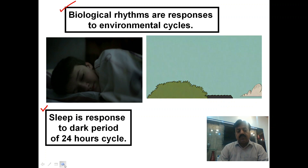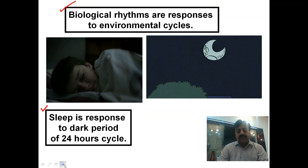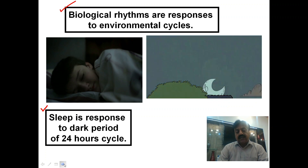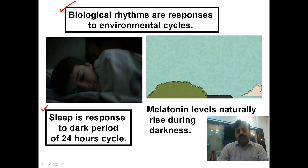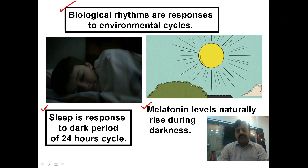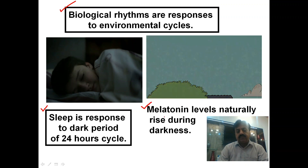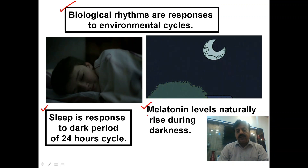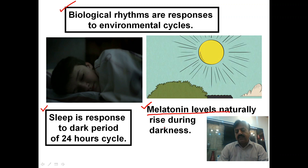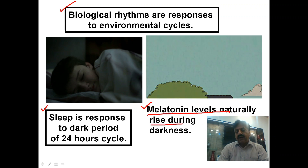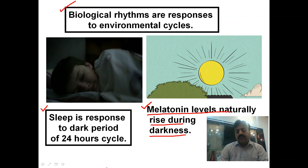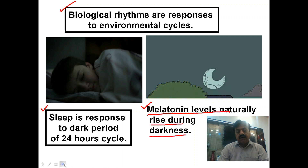During the night, a hormone called melatonin is produced in the body, which gives us sleep at night. Melatonin is a sleep-inducing hormone. Melatonin levels naturally rise during darkness, meaning during the period of night.